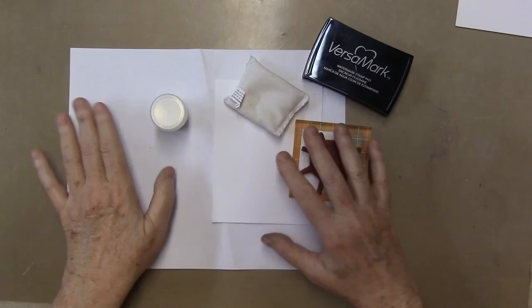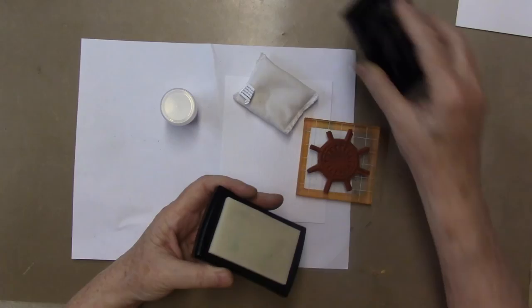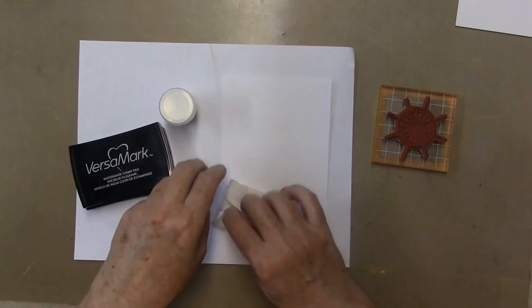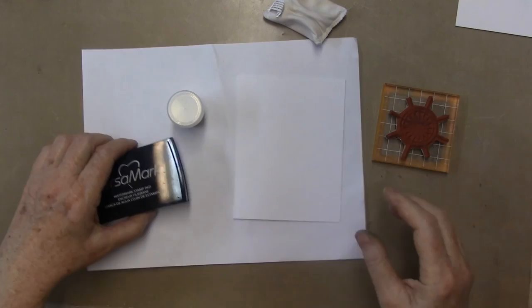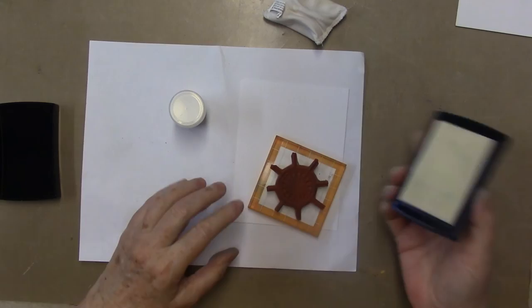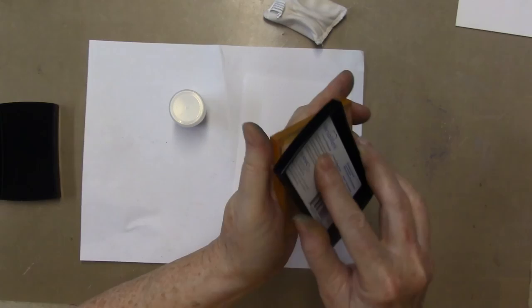I'm using heat embossing as a resist. Basically any resist would work. I've learned that no matter how much this little bag disappears on me, I have to hunt it down before heat embossing anything. It's an anti-static bag. I learned that during my foiled again class.